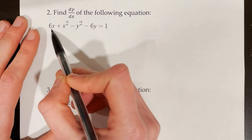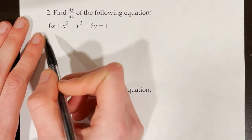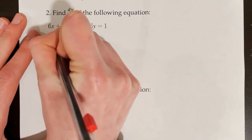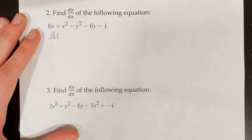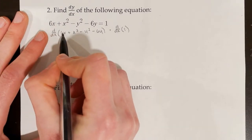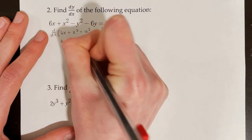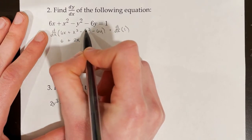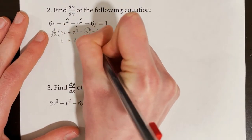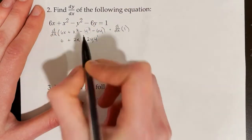Find dy/dx of the following equation: 6x plus x squared minus y squared minus 6y equals 1. This is another implicit equation, so we will need to use implicit differentiation. Our first step is to apply the derivative operator d/dx to both sides. The derivative of 6x with respect to x is 6; the derivative of x squared is 2x. For the y squared term, we take the derivative like normal to get negative 2y, but then we need to add on a y prime. For this example I will use y prime notation, so it's negative 2y times y prime.